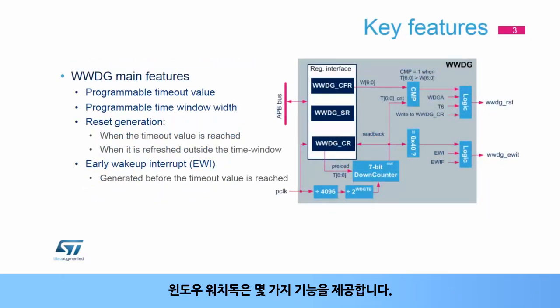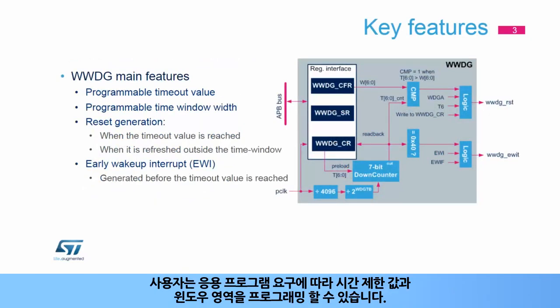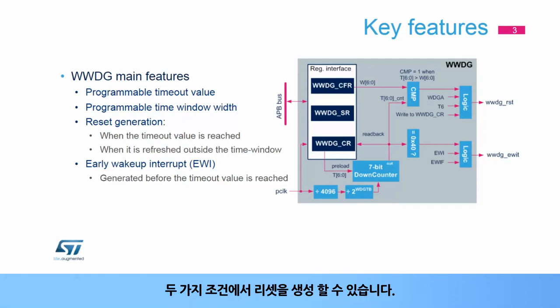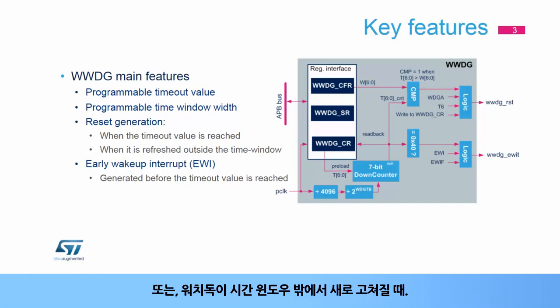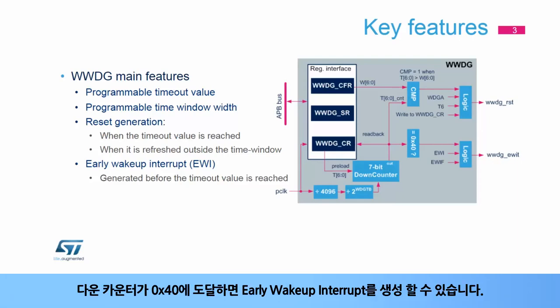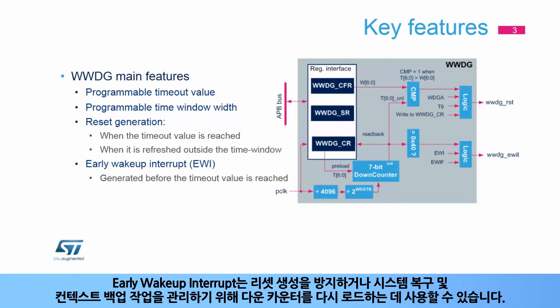The window watchdog offers several features. The user can program the timeout value and the window width according to application needs. It can generate a reset under two conditions: when the down counter value becomes less than or equal to 0x3F, or when the watchdog is refreshed outside the time window. It can generate an early wake-up interrupt when the down counter reaches 0x40, which can be used to reload the down counter to avoid a reset or to manage system recovery and context backup operations.